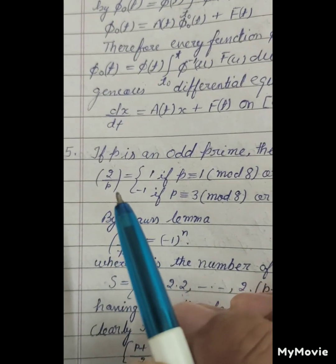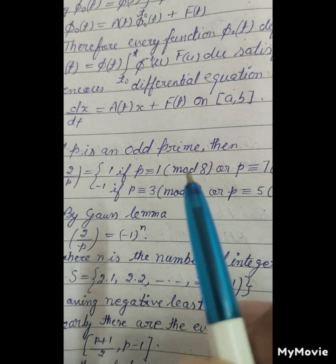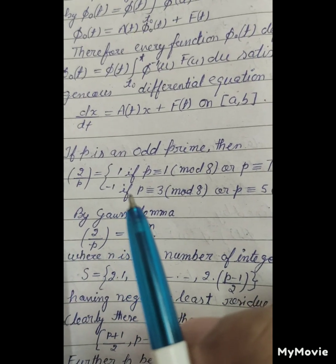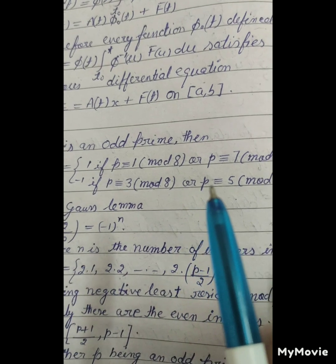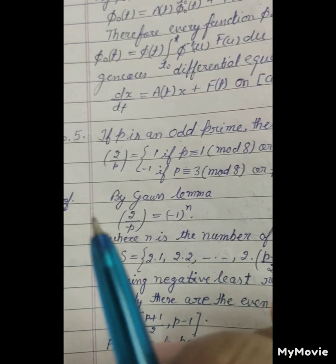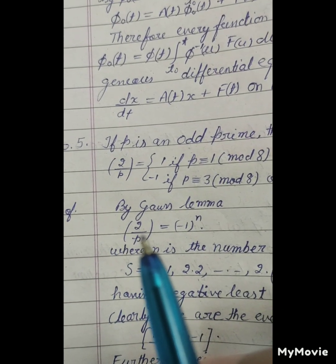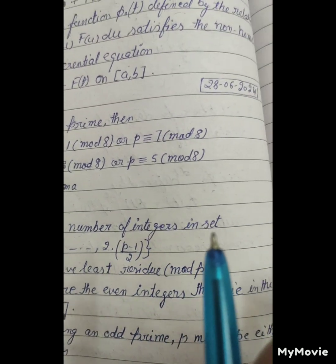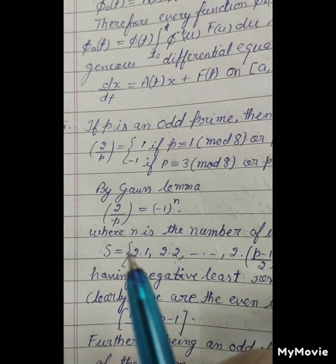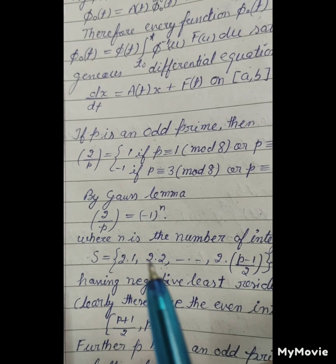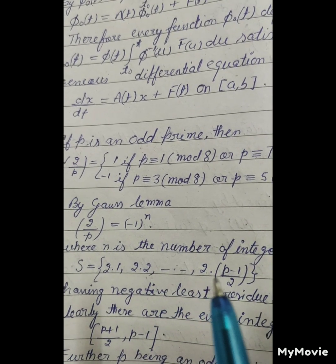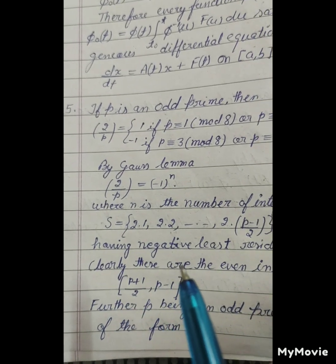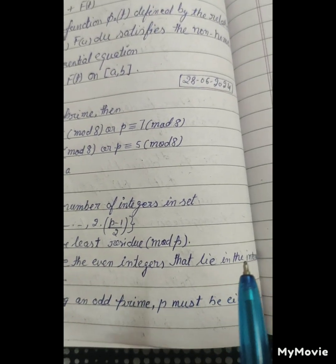If p is an odd prime, then (2/p) equals 1 if p is congruent to 1 or 7 modulo 8, and minus 1 if p is congruent to 3 or 5 modulo 8. Proof: By Gauss's Lemma, (2/p) equals minus 1 raised to the power n, where n is the number of integers in the set S = {2·1, 2·2, ..., 2·(p−1)/2} having negative least residue modulo p. Clearly these are the even integers that lie in the interval.